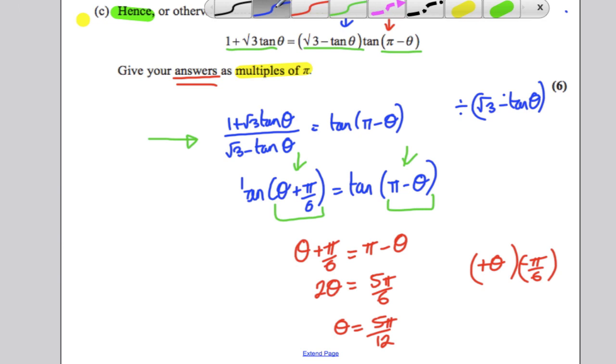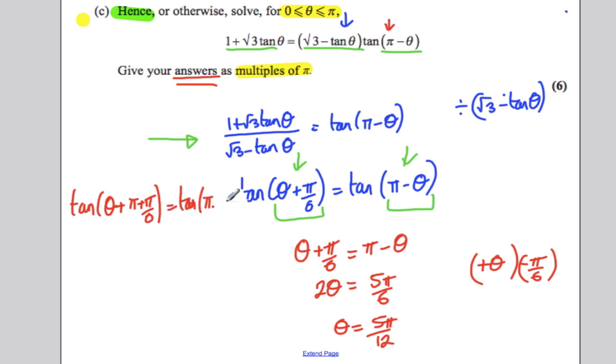We could try and solve the solution you'd get if you did tan of theta plus pi plus pi by 6 is equal to tan of pi minus theta. You know there could be a solution there. So this would give you that theta plus this plus this would be 7 pi by 6 would equal pi subtract theta. Add theta to both sides, subtract 7 pi by 6. You get 2 theta is equal to pi subtract 7 pi by 6, which would be negative pi by 6, and you get theta is equal to negative pi by 12. Now that's not in our range 0 to pi, so we would have to ignore that one.